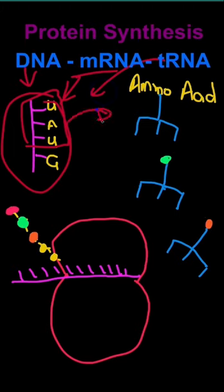This codon is read by tRNA molecules that are free-floating in the cytoplasm. The mRNA molecule attaches itself to the ribosome.